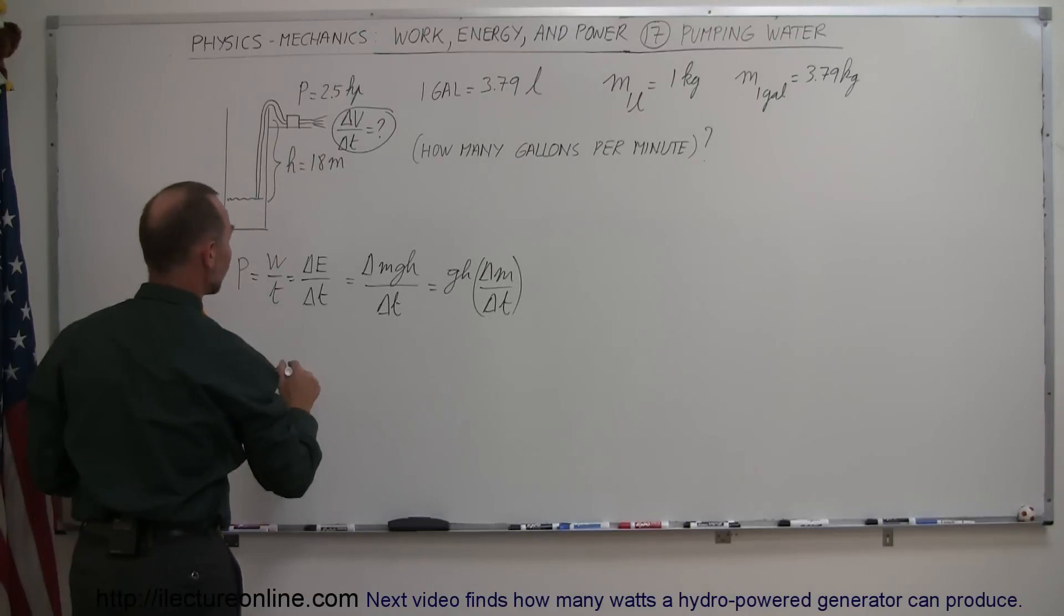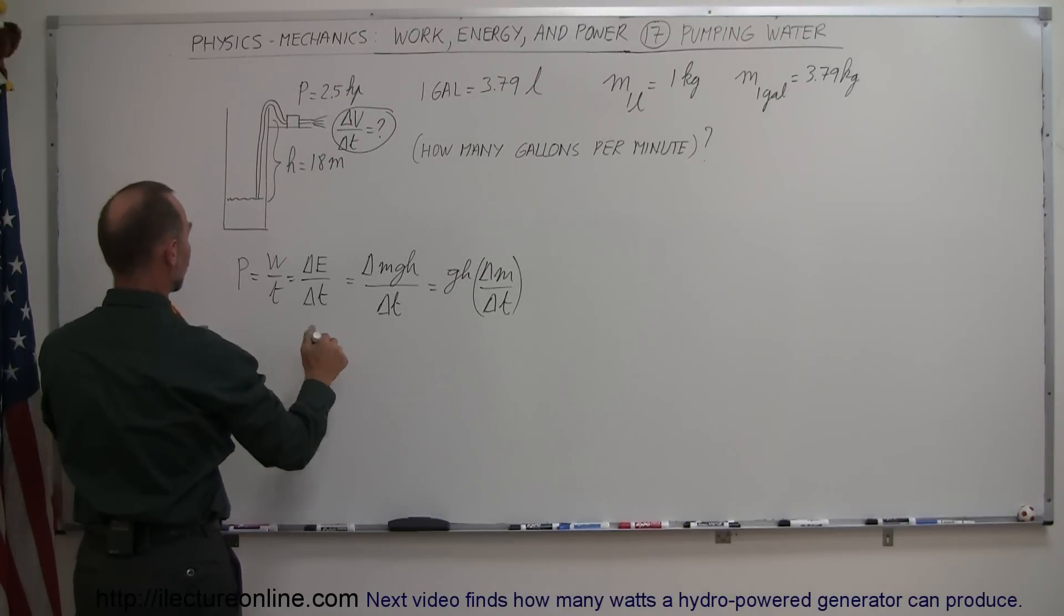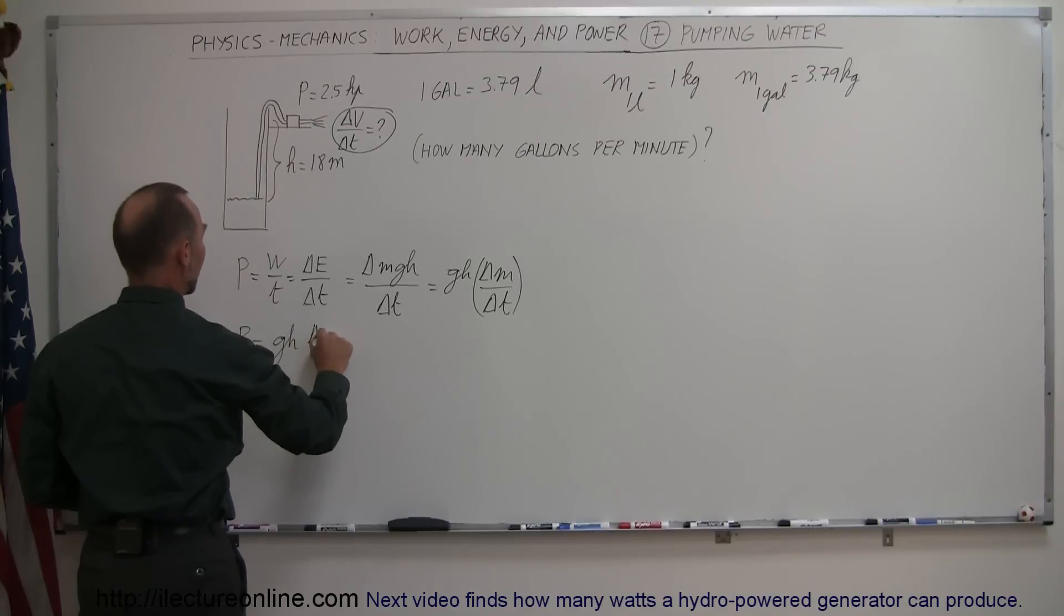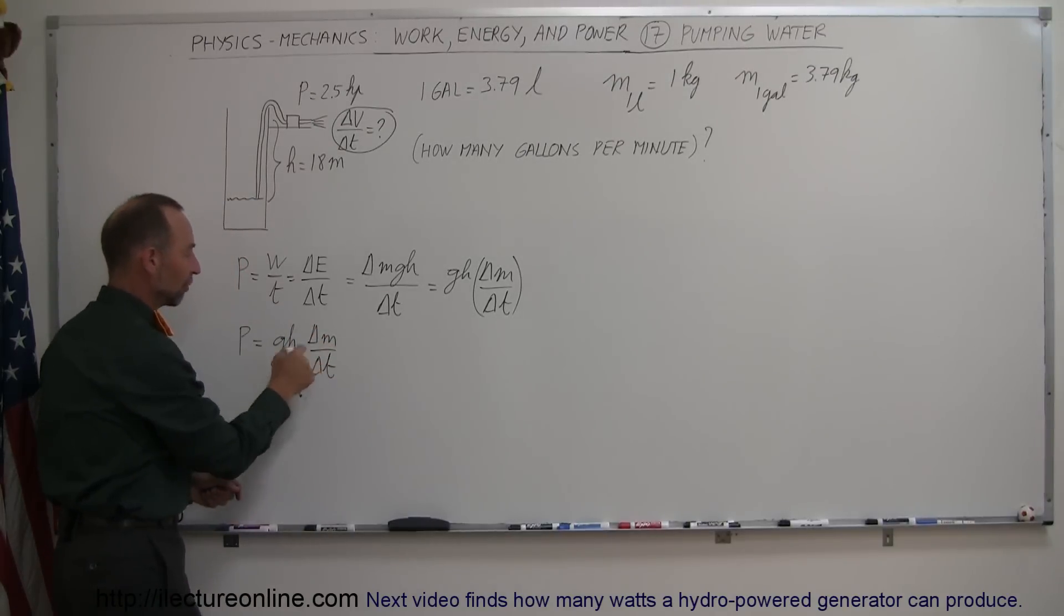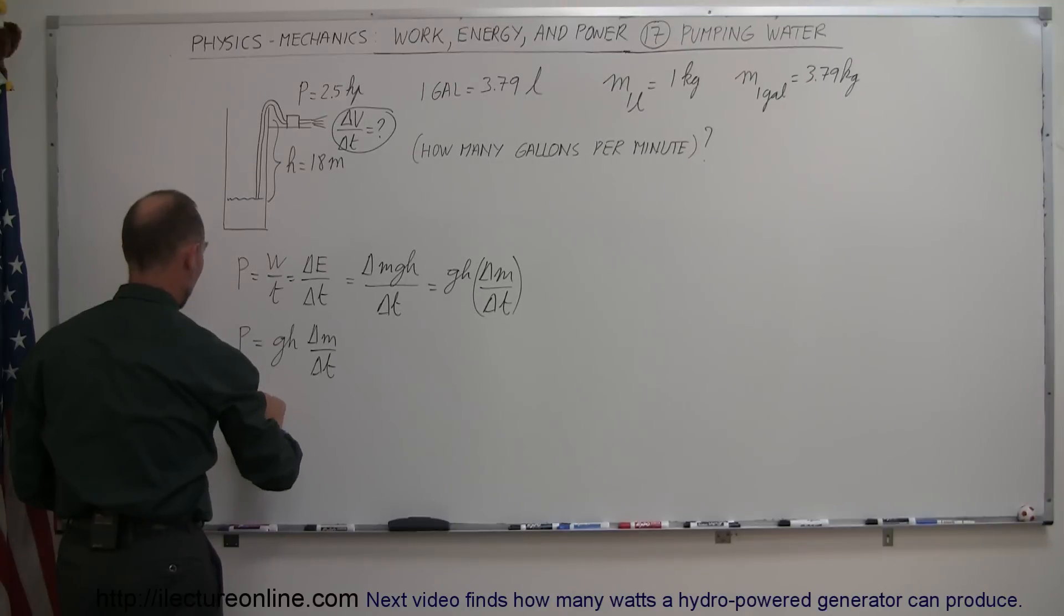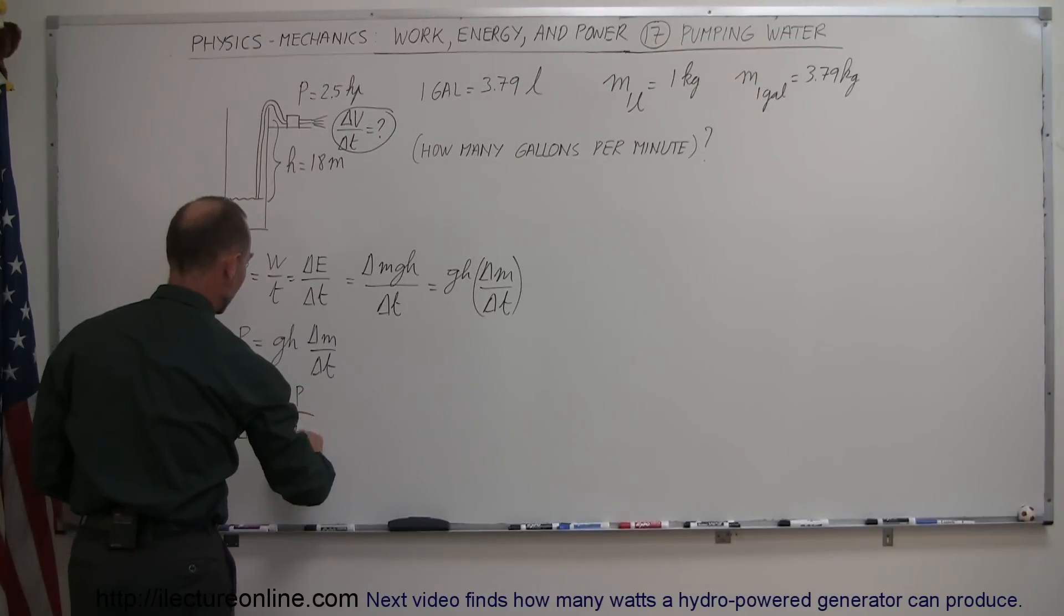So that means we're going to write, we're going to say power is equal to GH times delta M over delta T. And dividing both sides by GH and solving for delta M delta T, we can write delta M delta T is equal to power divided by G times H.